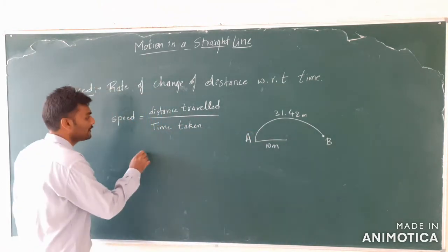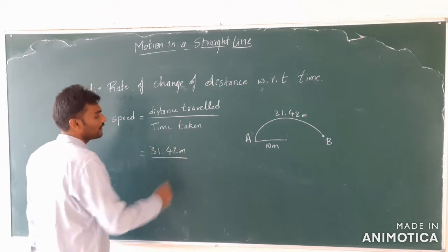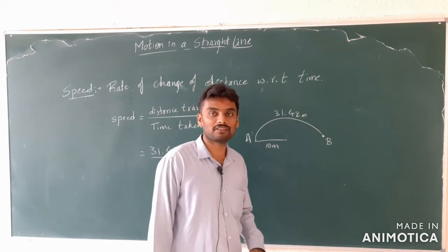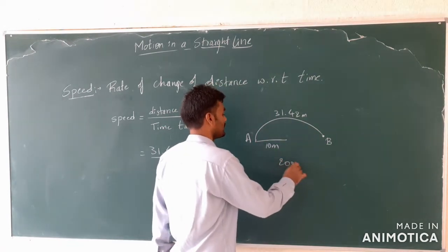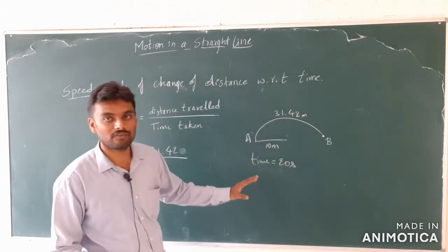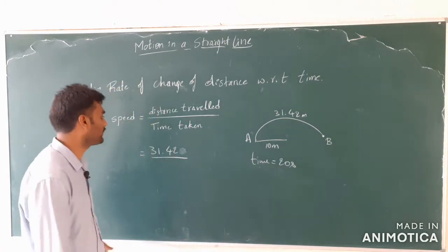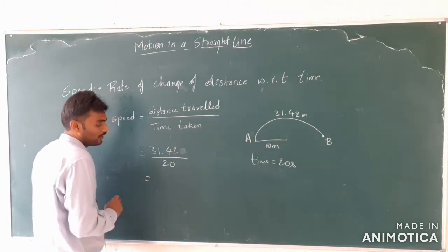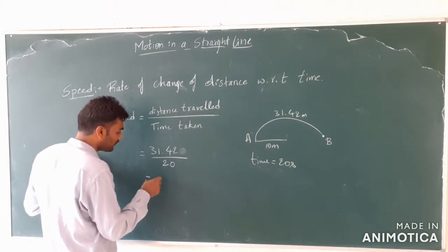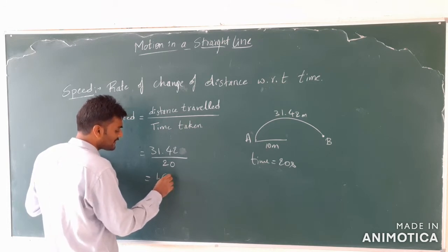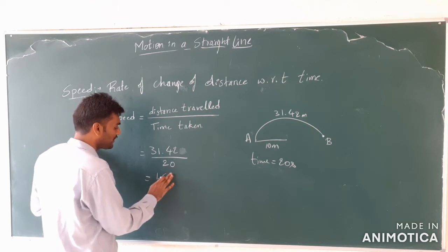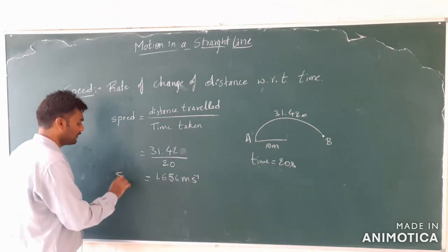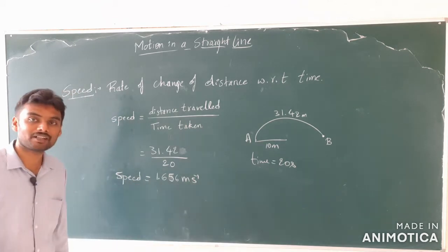The distance travelled in this example is 31.42 meters, and the time taken is 20 seconds. So speed = 31.42 ÷ 20 = 3.142 ÷ 2 ≈ 1.571 meters per second, close to 1.57 m/s. This is how we calculate speed: distance travelled divided by time taken. Speed is associated with the distance travelled — keep that in mind.